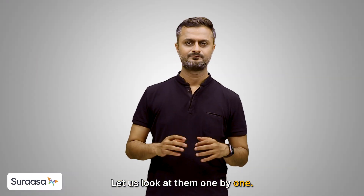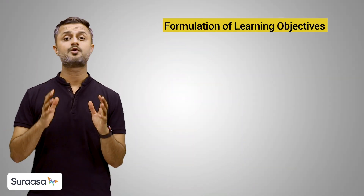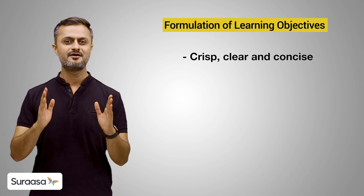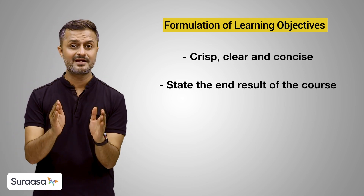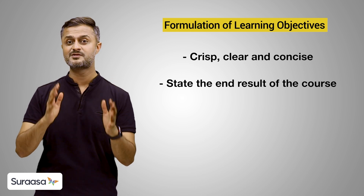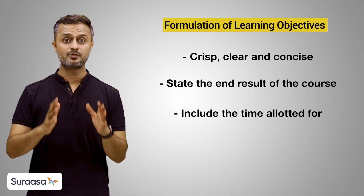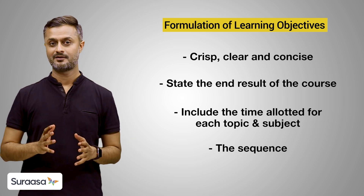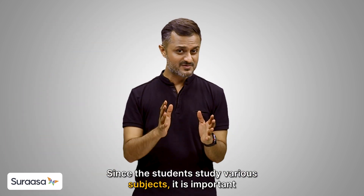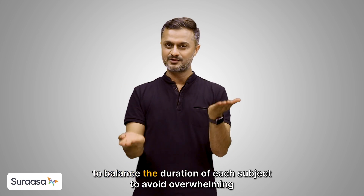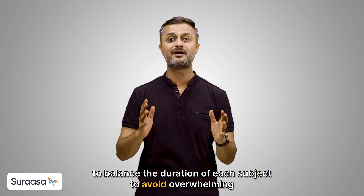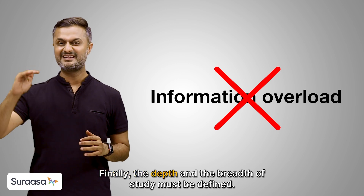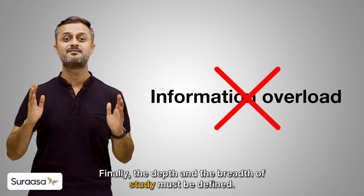Let us look at them one by one. The first step is formulation of learning objectives. The objectives must be crisp, clear and concise and must state the end result of the course the learners will study. It must also include the time allotted for each topic and subject and the sequence in which it might be taught. Since the students study various subjects, it is important to balance the duration of each subject to avoid overwhelming the students with information overload. Finally, the depth and the breadth of study must be defined.